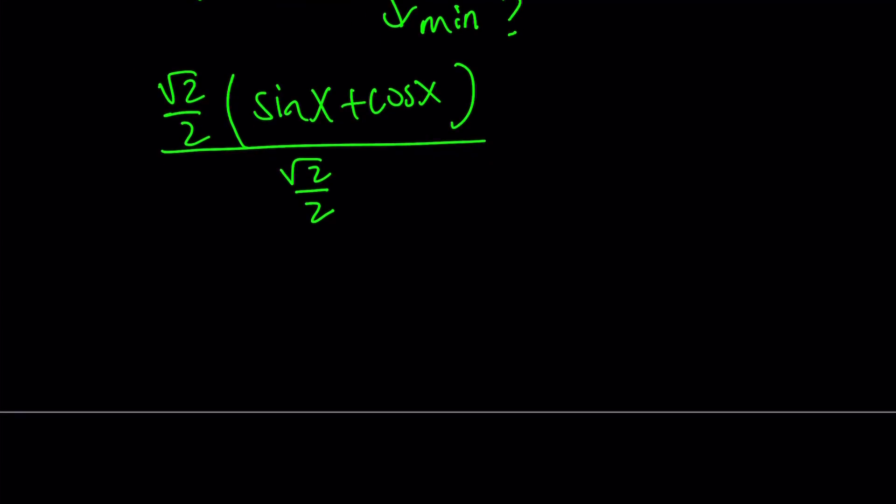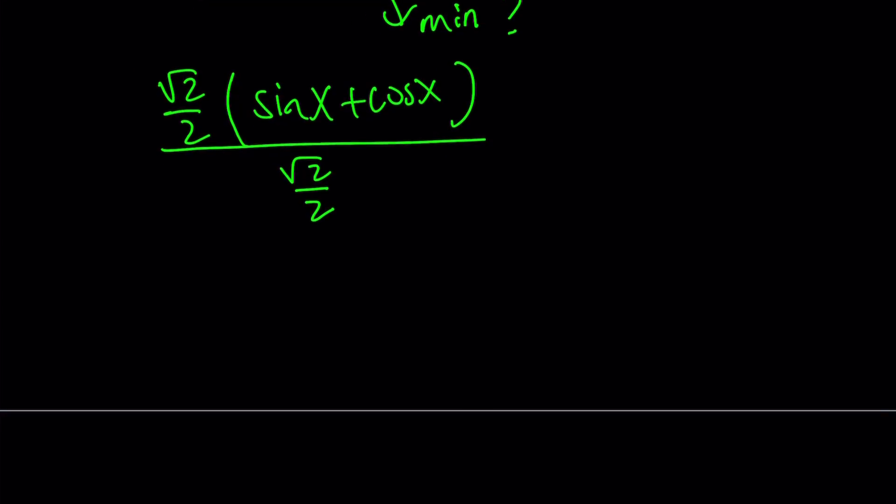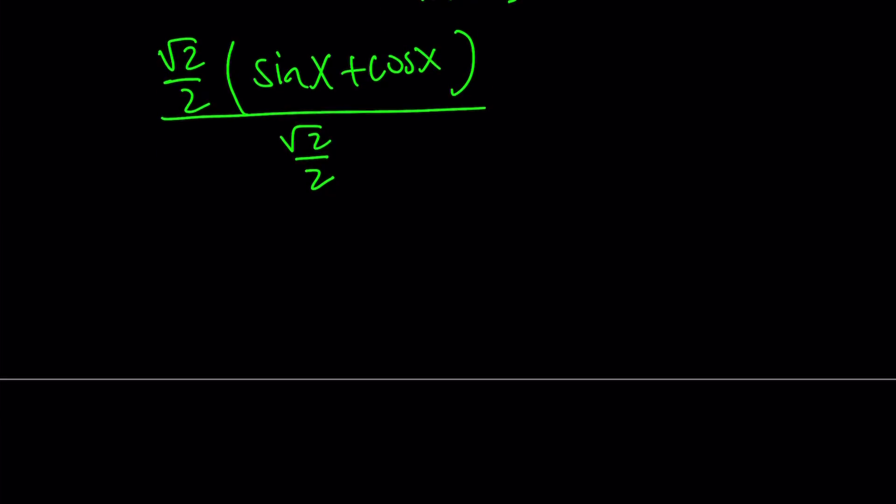Now, I want to distribute the square root of 2 over 2 and from there I'm going to get something nice. Let's go ahead and write it as follows: sin x multiplied by root 2 over 2 plus root 2 over 2 times cos x. There's a reason why I write it that way. You'll see in a little bit. And then the whole thing is divided by root 2 over 2.